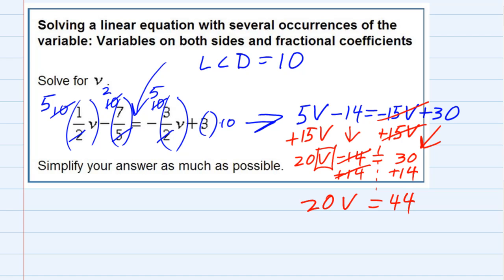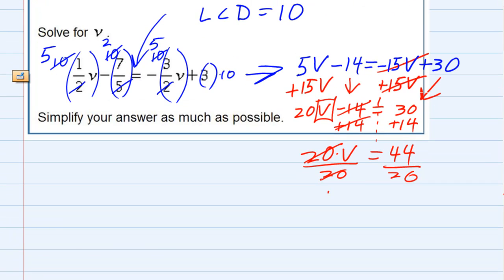One last step, and that is we need to get rid of the 20. And since it's being multiplied now, I can undo that by dividing both sides, because it's equal. Dividing on the left cancels the 20s, leaving me with just v. On the right, I have 44 divided by 20.